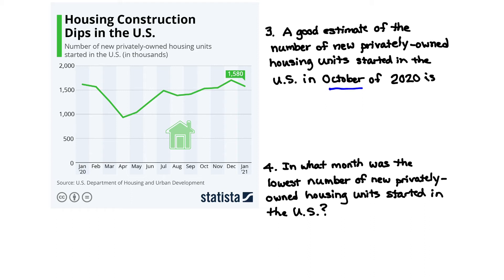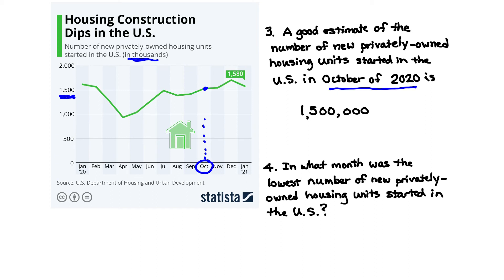We start with October 2020 on the horizontal axis and look at where it meets the line graph. It's very close to 1,500 — but remember, that's in thousands. So a good estimate is 1,500,000. The number 1,500 corresponds to the line approximately, but we add three zeros since the values are in thousands.